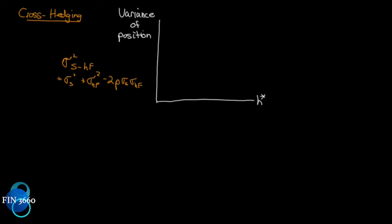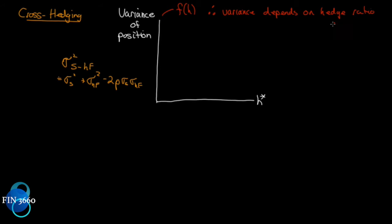What we can see very clearly here — and this is important — is that the variance of our position is in part a function of the hedge ratio we choose. Therefore, we can say the variance depends on the hedge ratio chosen. And what we want to do is choose this hedge ratio that minimizes this variance.